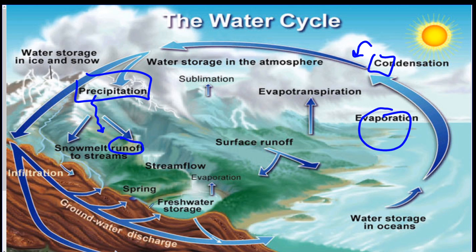Some of that water gets absorbed into the ground through a process called infiltration, which means to seep into the dirt essentially, and that might pool up underneath as groundwater. There's also water coming off plants, which is called transpiration.